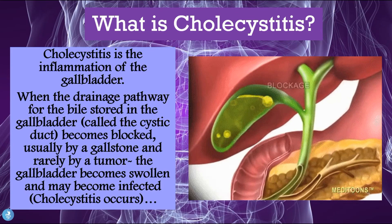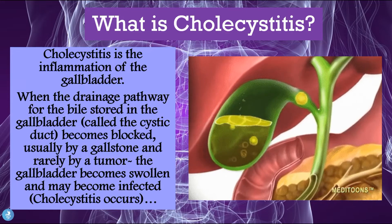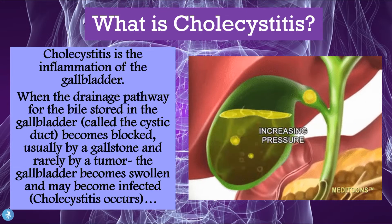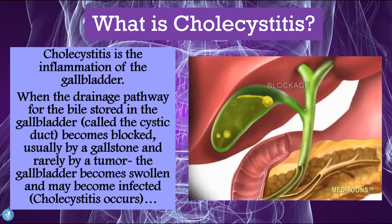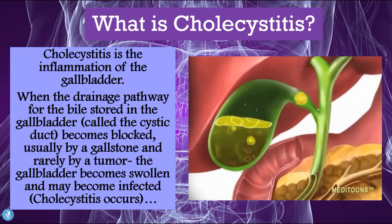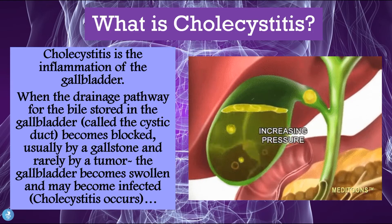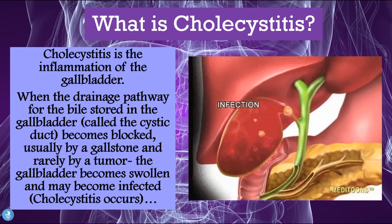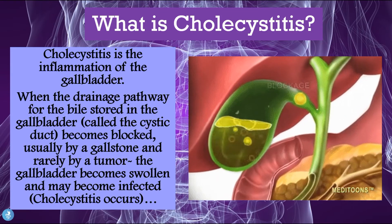Now let's talk about what cholecystitis is. As mentioned, cholecystitis is the inflammation of the gallbladder. When the drainage pathway for the bile stored in the gallbladder — called the cystic duct — becomes blocked, usually by a gallstone and sometimes in rare cases by a tumor, the gallbladder becomes swollen and may become infected. This is when cholecystitis occurs.